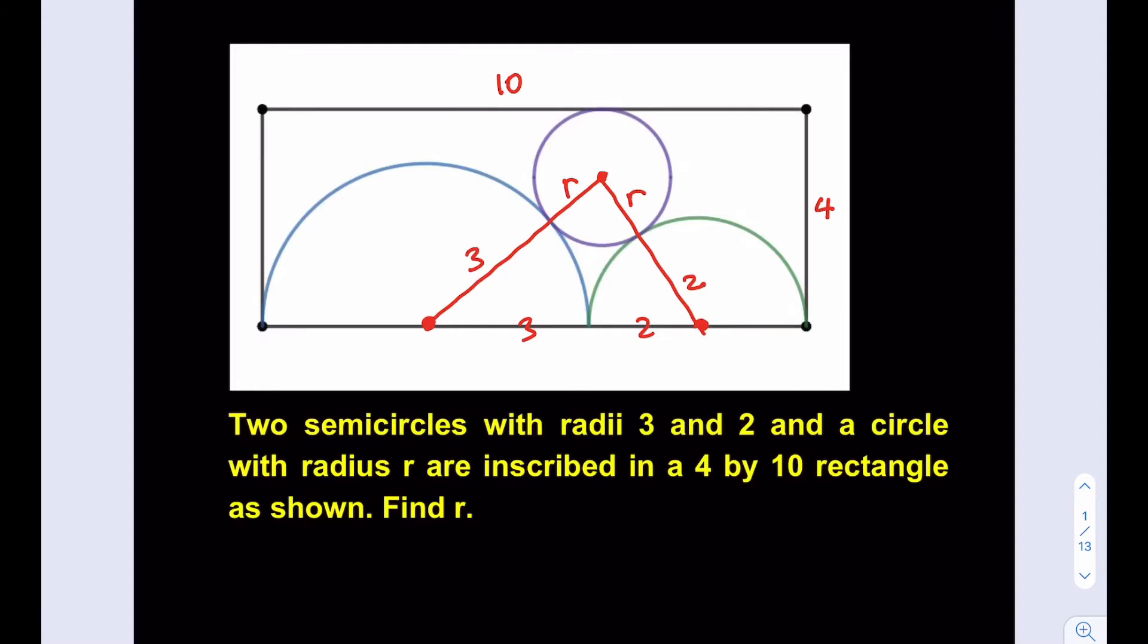We're going to drop a perpendicular and make sure that it passes through the center so that this is also r. Now look at the rectangle. The height is 4, so this height, the height of the right triangle here, I mean actually two right triangles that are sharing the same height, this is going to be 4 minus r. We're going to be using the Pythagorean theorem. Let's go ahead and set up our equations. But we don't know this length. Let's call that x, and then this is going to be 5 minus x because the whole thing is 5, 3 plus 2, right?